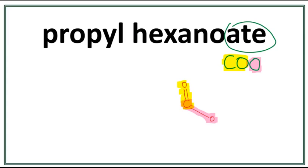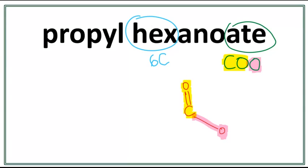We have the functional group drawn in. Let's work on the parent chain. This 'hex' right here tells us that there are six carbons in the longest carbon chain. The parent chain always attaches with the carbon in the COO group, so right here. The trick to draw this is you always count till one less than the number of carbons you want to draw. So we count one, two, three, four, five.